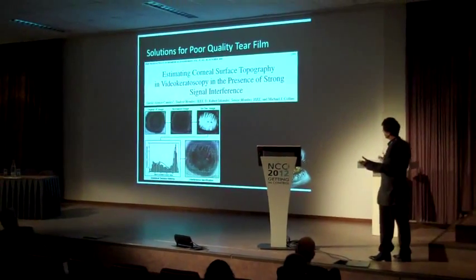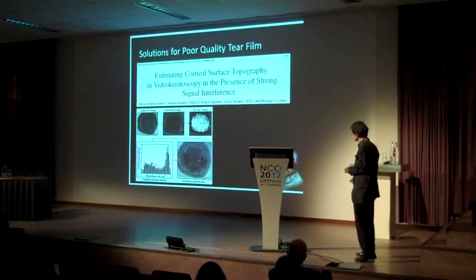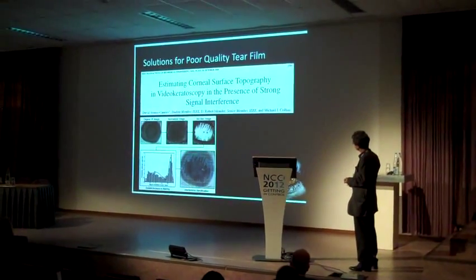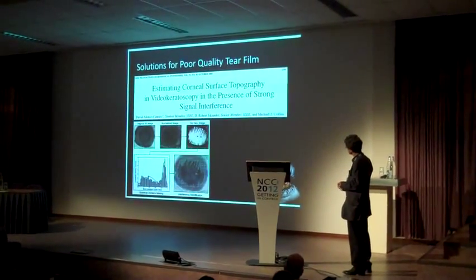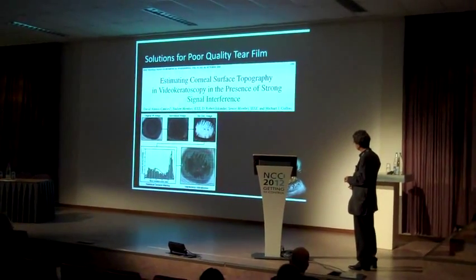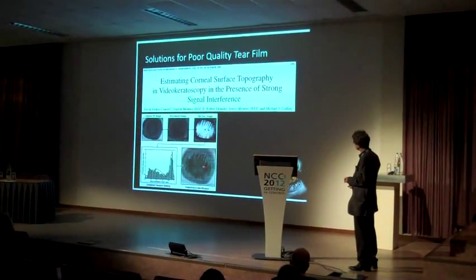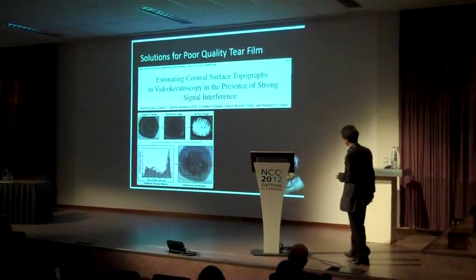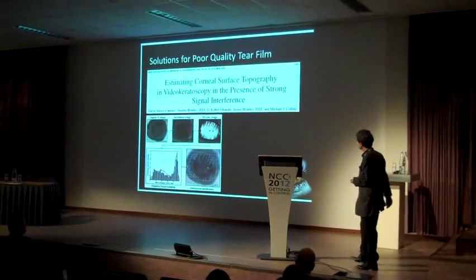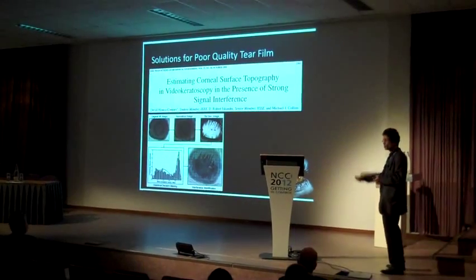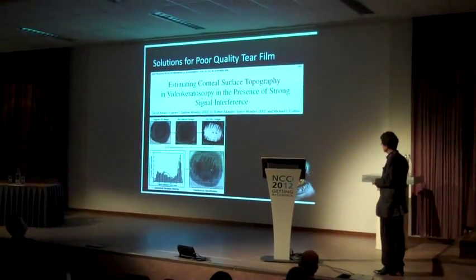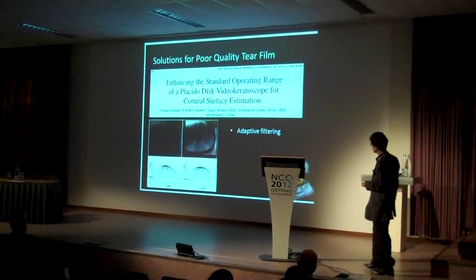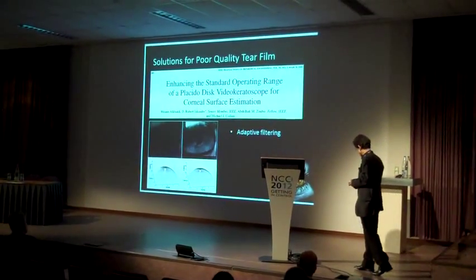Now let's focus on topography. If we determine that there are certain points which we cannot trust — just because we had eyelashes, or because there was a breakup of the tear film — we can remove them, or we can smooth them so the optometrist doesn't see, but this is really cheating. It's best to leave it out, or we can use other techniques based on adaptive filtering.